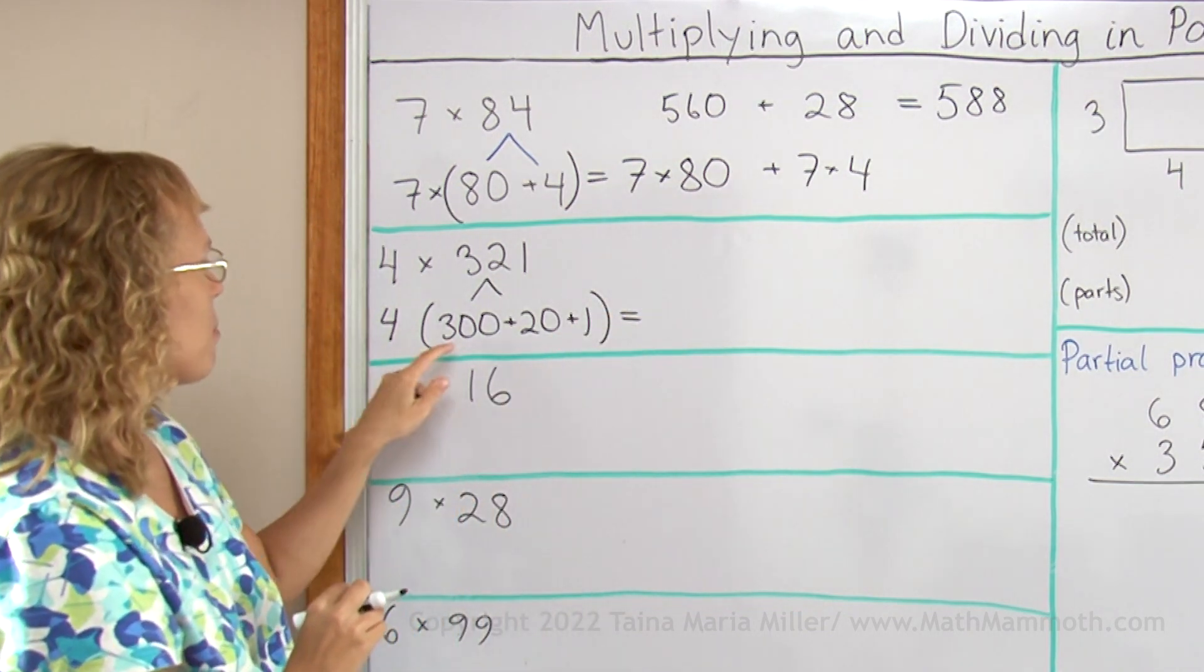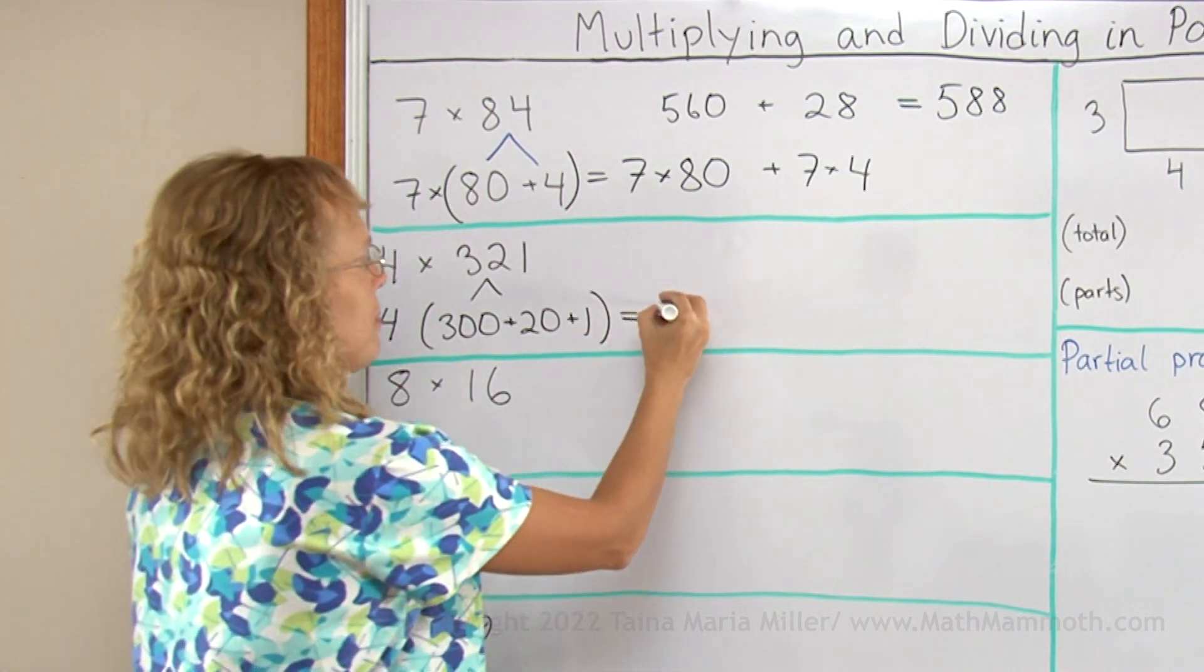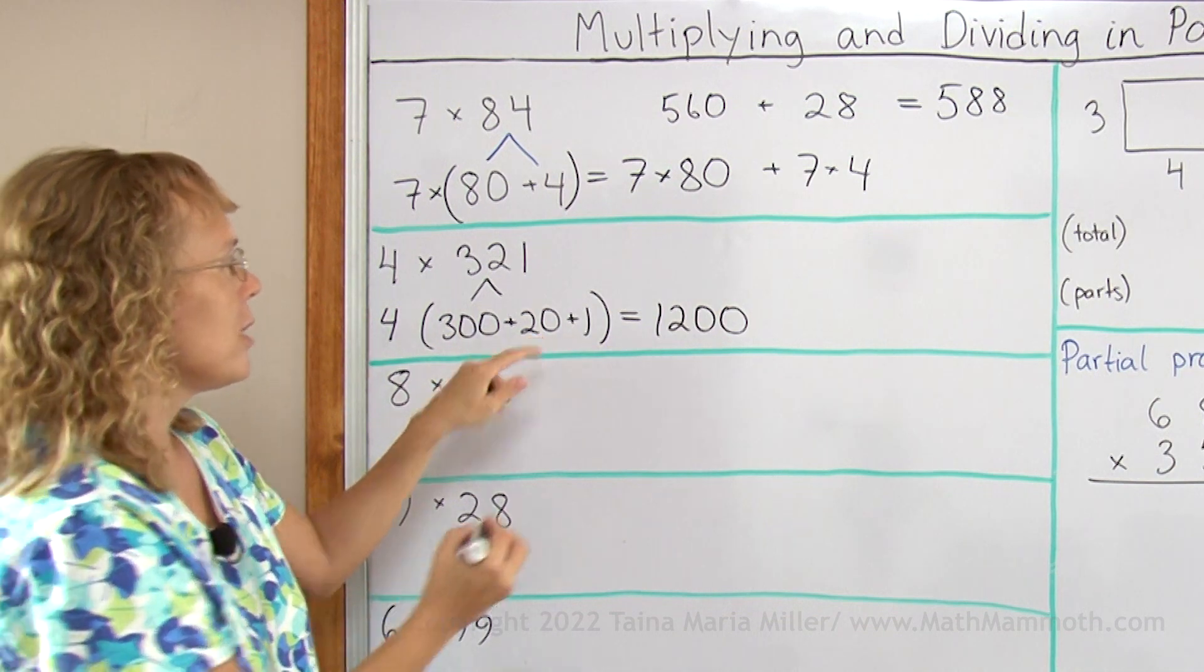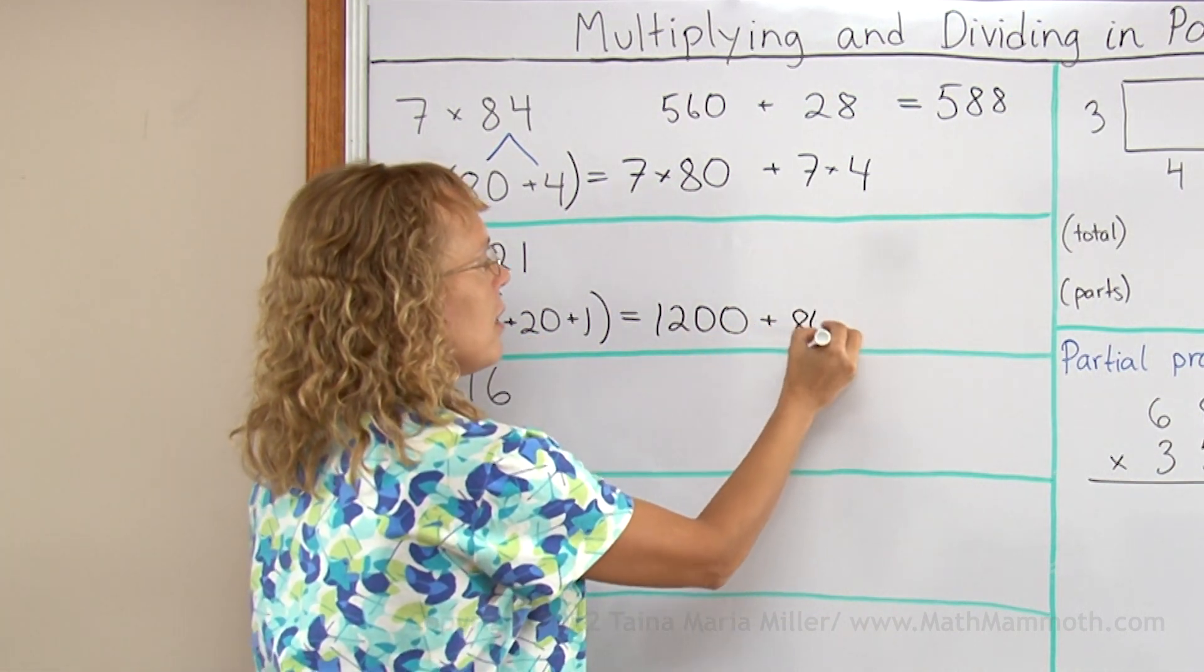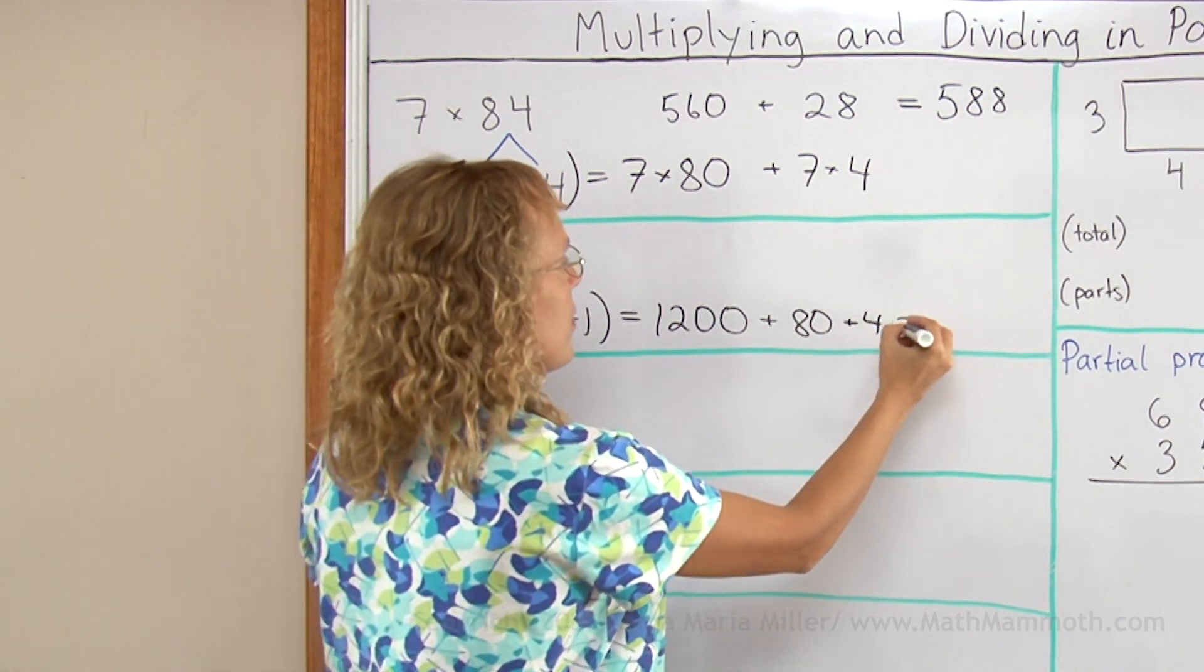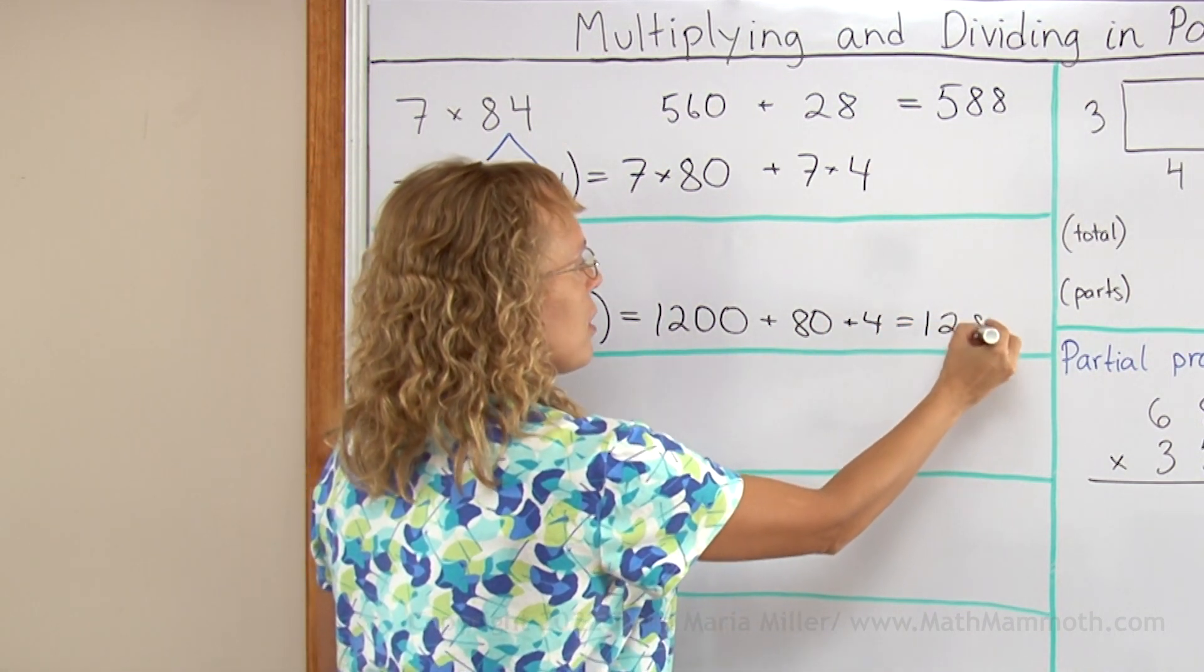So I will multiply 4 times 300, and that's 1200. Then I multiply 4 times 20, that's 80. And then 4 times 1, and that's 4. Now you just add here, 1284.